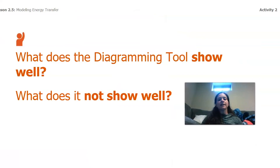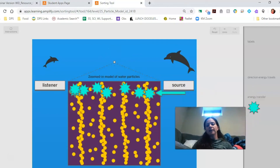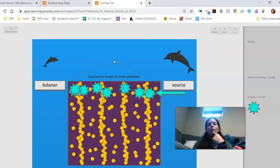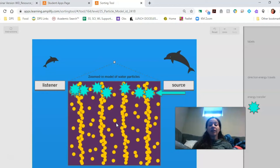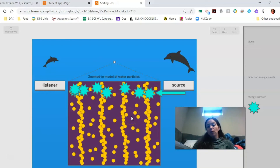We just did that diagramming tool — it's a model. So it showed us some things really well, but it might not show us everything. Take a moment to think about what's a great thing about this model and what's something it doesn't show well. One thing I thought about is this model does a pretty good job of showing the particles — I can visualize underwater what these particles look like. Something I didn't think it showed very well is motion. In the simulation, we can see movement happening; in this model, we don't.